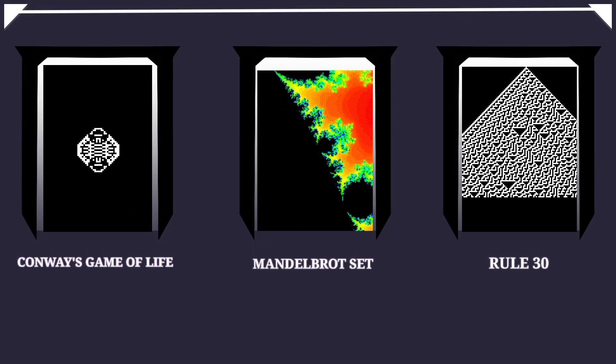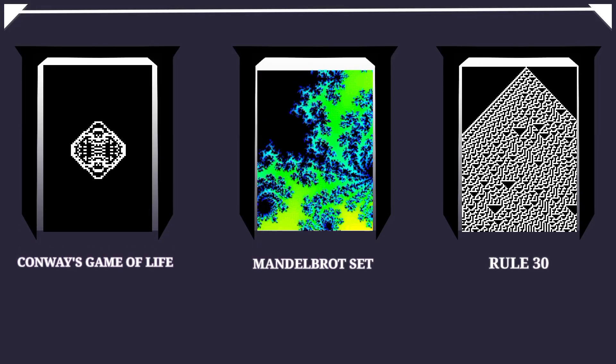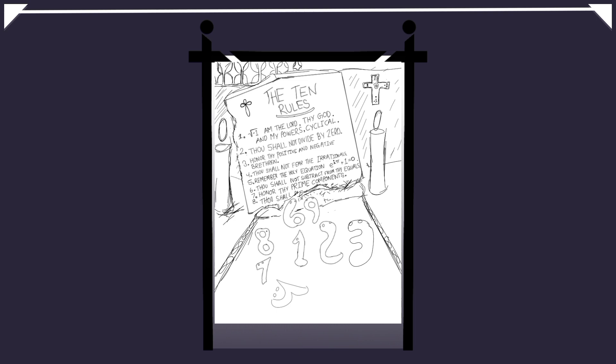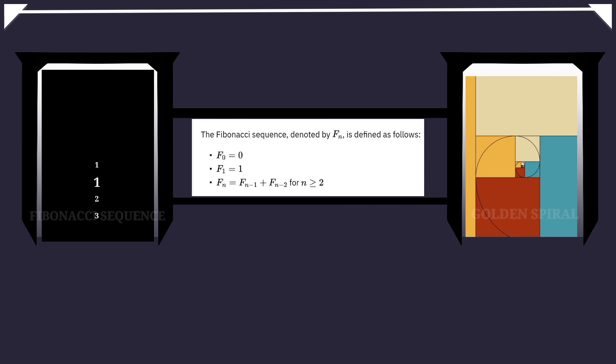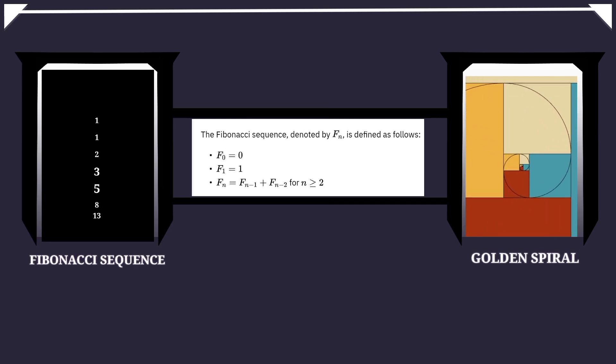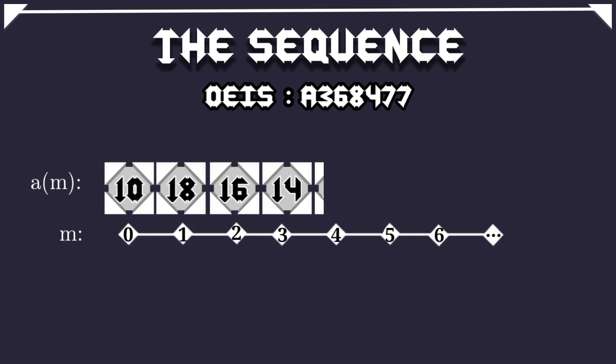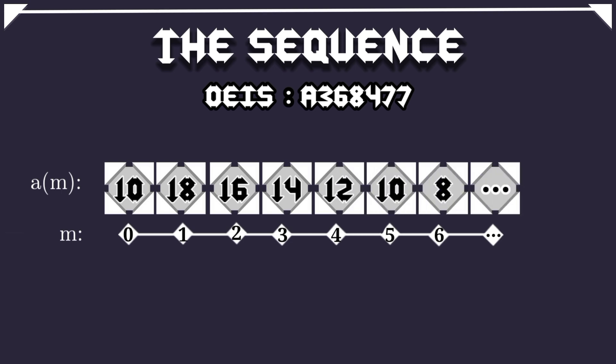There are many examples of simple rules giving rise to complex patterns. Integer sequences are just collections of integers that follow certain rules. The Fibonacci sequence is defined simply, yet it gives rise to complex patterns. This video is about a sequence I discovered not so long ago.